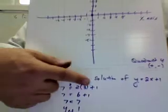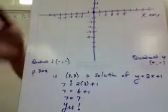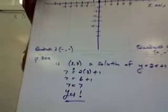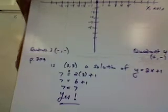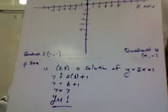According to the equation, 7 equals 2 times 3 plus 1. And we solve it. We get 7 equals 6 plus 1, which is true. 7 does equal 7. So yes, 3,7 is a solution of y equals 2x plus 1.